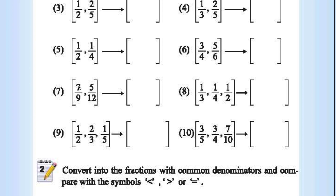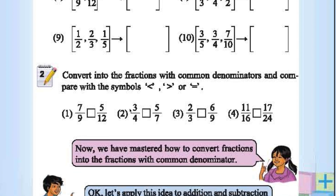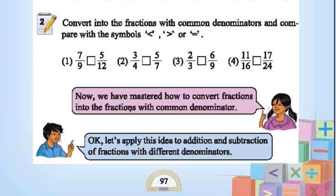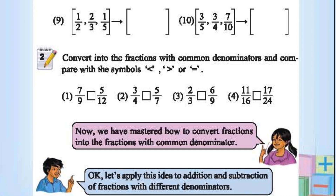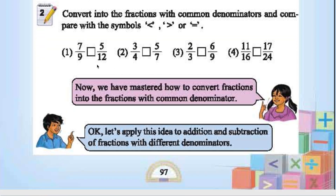Multiply with 4 to get 28 by 36. Here multiply with 3 to get 15 by 36. Convert into fractions with a common denominator and compare with symbols. For 7 by 9 and 5 by 12, the LCM is 36, giving 28 by 36 and 15 by 36.